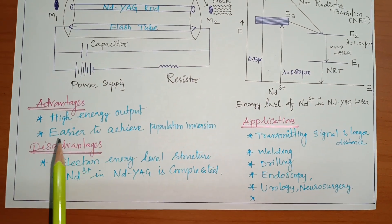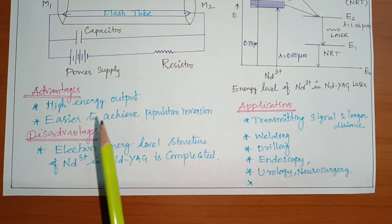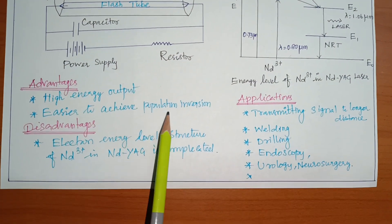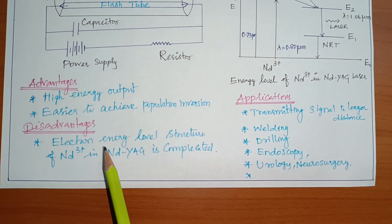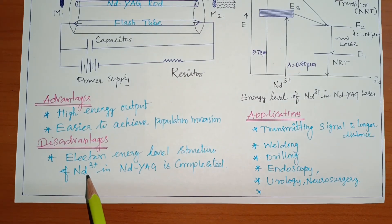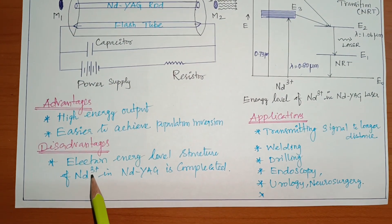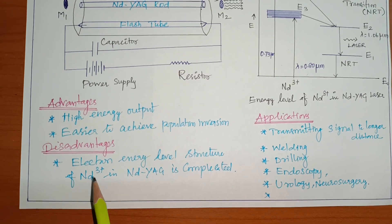Then advantages it is high energy output. Then easier to achieve population inversion. These are the advantages. Disadvantages. Energy level structure the neodymium ions it is very complicated. It is very complicated. Neodymium is one of the rare earth elements.